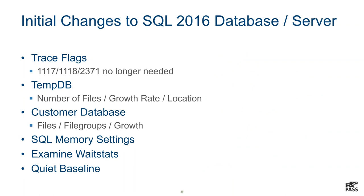When we're at the customer site, we look at the configuration of SQL Server and the environment. We look at trace flags — some trace flags I often implement, such as 1117, 1118, and 2371, are no longer needed because they are the default now in SQL Server 2016. We look at tempDB to make sure it's set up right with the number of files, growth rate, and location. We do the same with the customer database. We look at memory settings. We also look at wait stats before we do anything and do what I call a quiet baseline, so I know what the levels are when nothing's happening on the system and I have something to compare against when I look at performance counters after the fact.